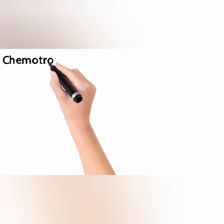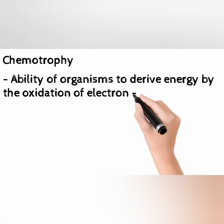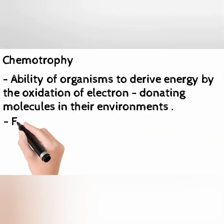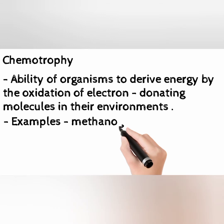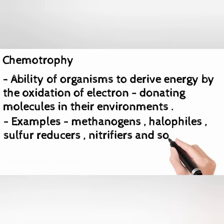Chemotrophy is the ability of organisms to derive energy by the oxidation of electron-donating molecules in their environments. Examples include methanogens, halophiles, sulfur reducers, and nitrifiers.